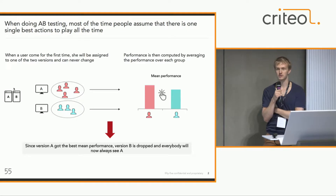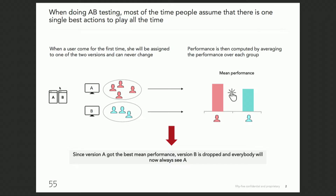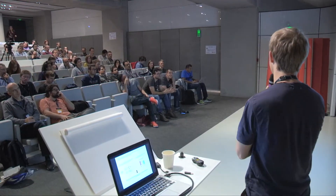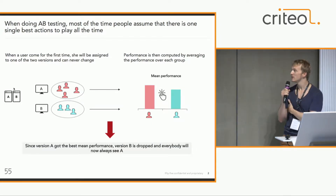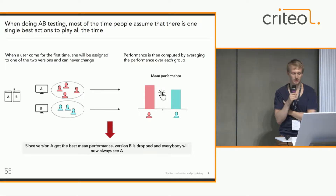In order to find this action, we're going to split the population. A part of the population will see only version A, and the other part of the population will see only version B. Then we wait for a while, and at the end we compare the performance and say version A gets a higher performance — so this is my best action and I will show this creation, for instance, to everybody and always.